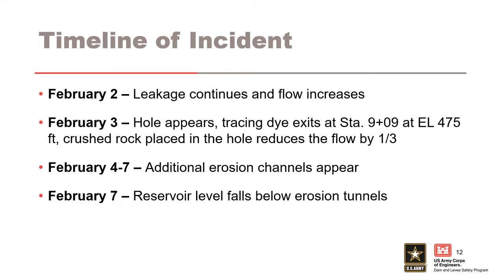Leakage continued to increase and the flow was measured at 18 CFS. The discharge point at station 9+09 climbed to elevation 478 feet. Exploratory drilling from the crest started. On the next day, a hole appeared on the upstream face of the embankment at station 2+12 at elevation 485. Tracing dye placed at the upstream entrance exited the downstream face at 9+09 at elevation 475, approximately 13 minutes later.